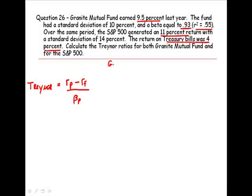For Granite Mutual Fund, we have a return of 9.5%, a risk-free rate of 4%, and a beta of 0.93, giving us a Treynor ratio equal to 5.91.